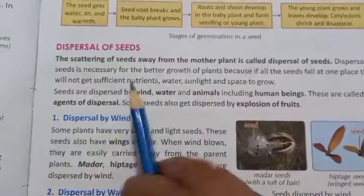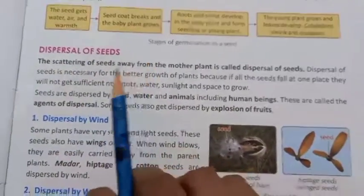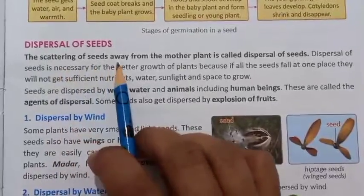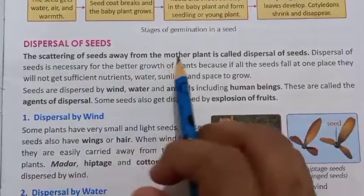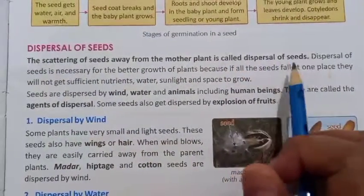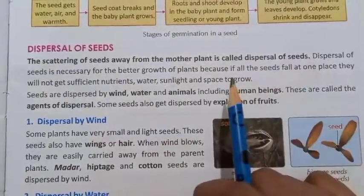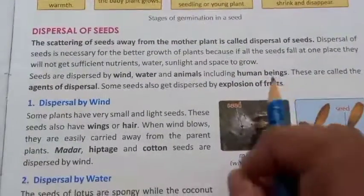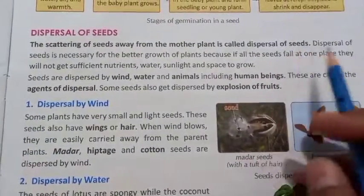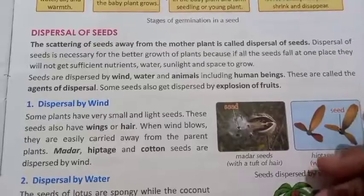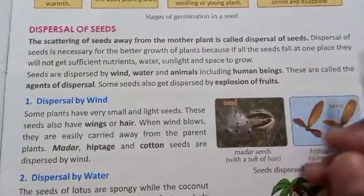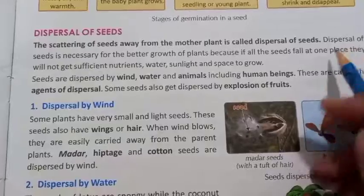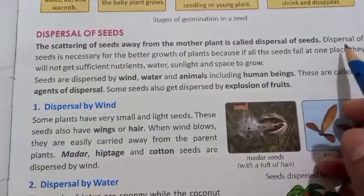Now we come to the dispersal of seeds. Dispersal of seeds means the scattering of seeds away from the mother plant. In other words, seeds का दूर दूर जाके अपने mother plant से बिखर जाना — उसको बोलते हैं dispersal of seeds.